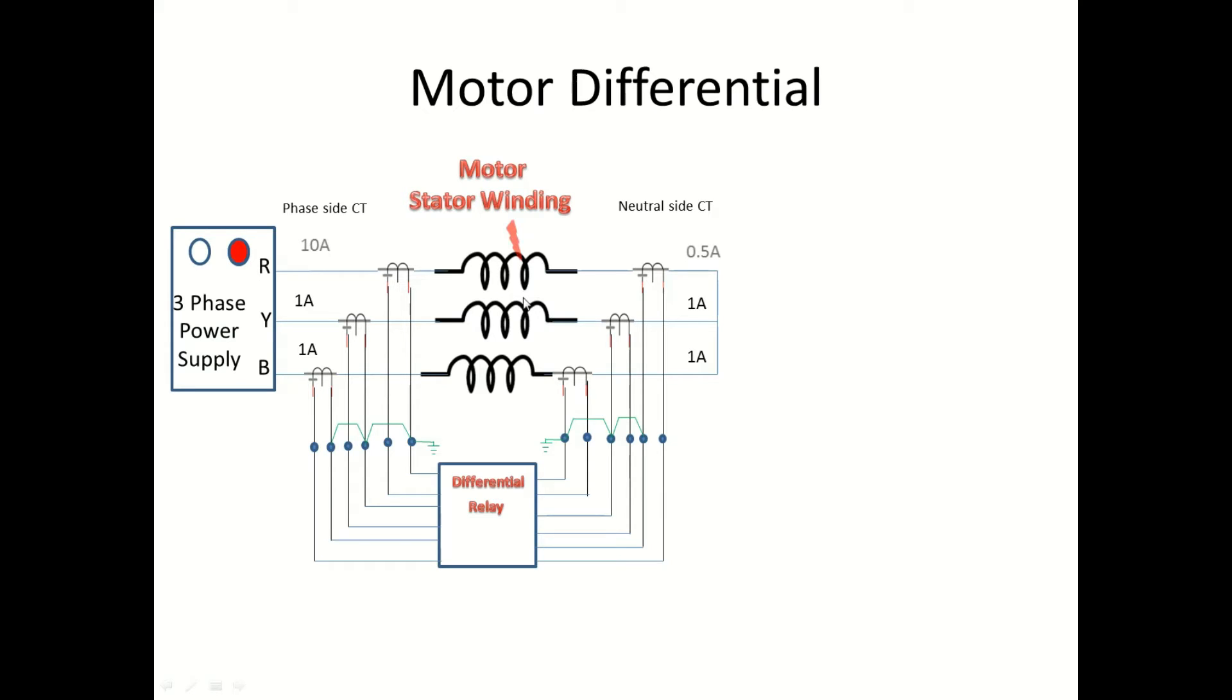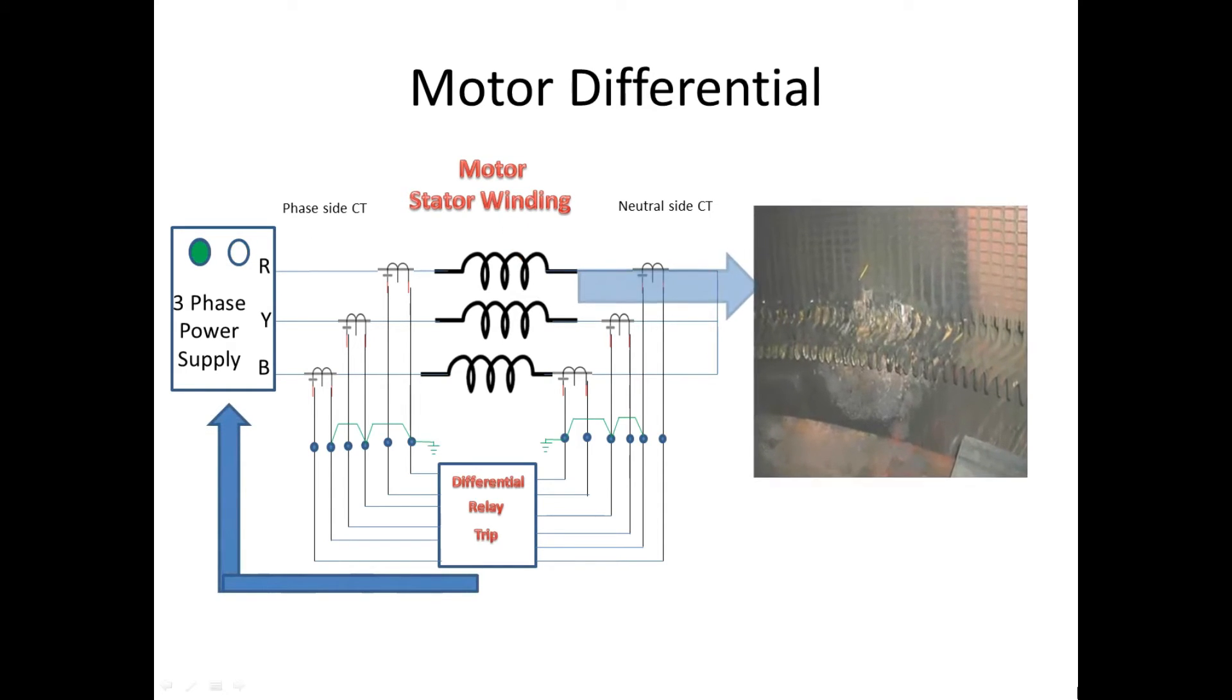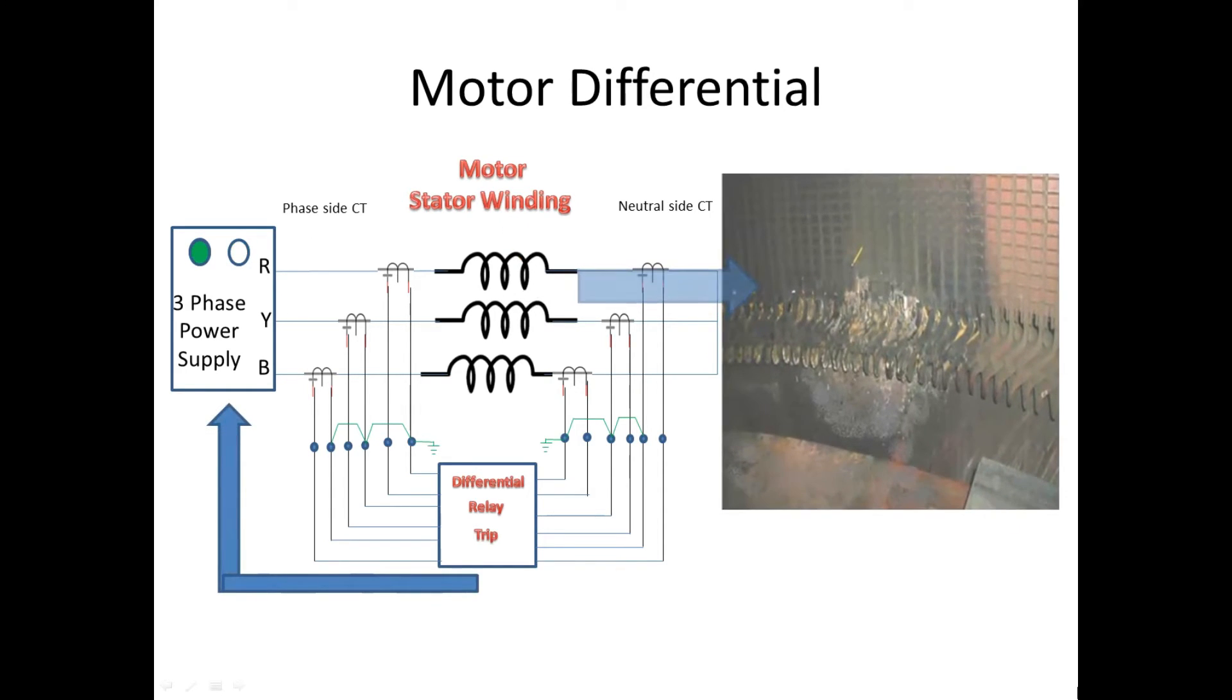And on the other side, the neutral side only takes 0.5A. So the differential relay senses the differential current and gives a trip to the breaker. Now the breaker trips and the power supply is cut. So the fault has been isolated from the beginning stage of the fault, like this.